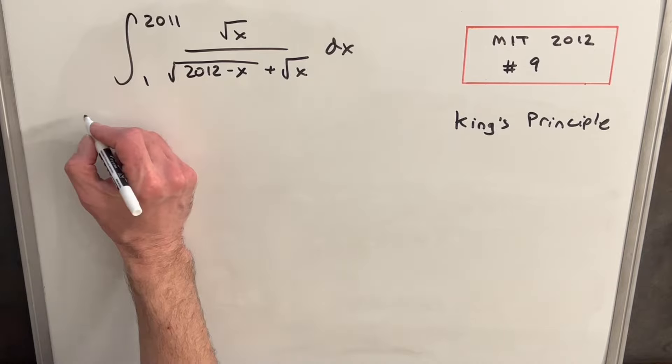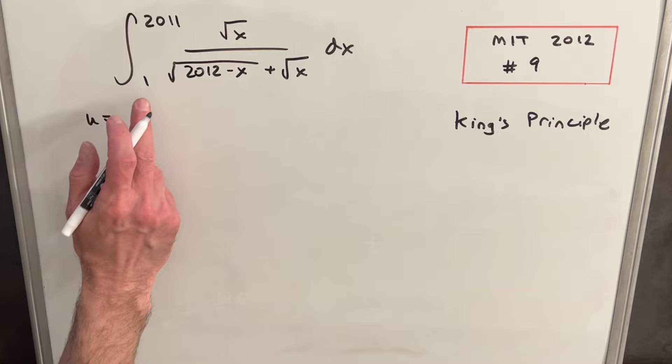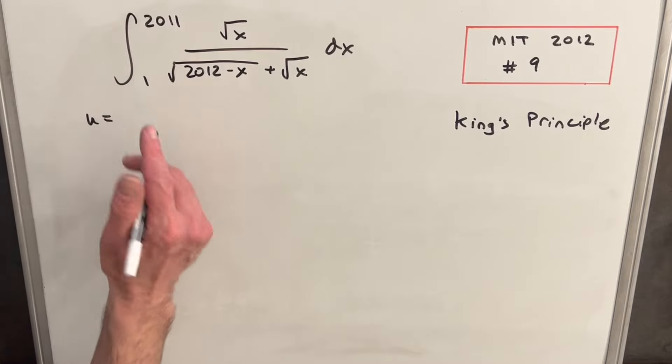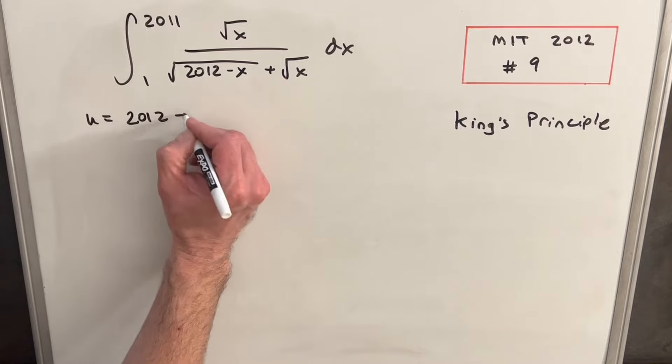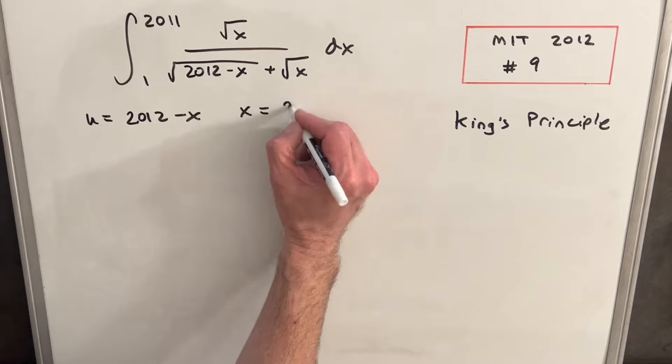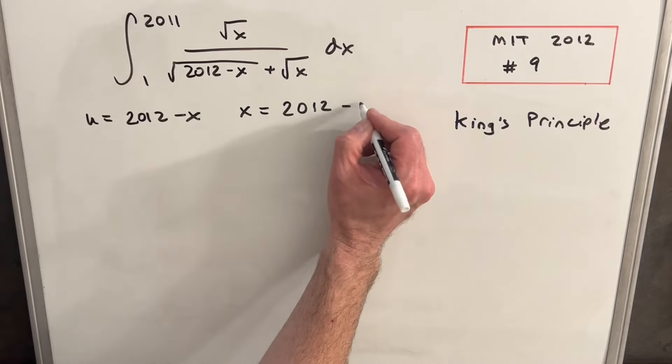So we're going to do a u substitution. What I want to do for my u is we're going to add the bounds together. So 2011 plus 1 is going to be 2012 minus x. From that, with just a little rearranging, we can say that x equals 2012 minus u.